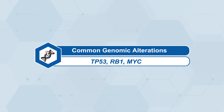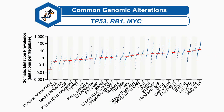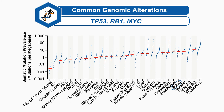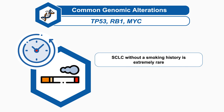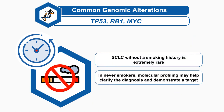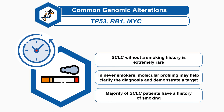Looking at the genomic alterations in small cell lung cancer, there are many somatic mutations present within tumor specimens. Across all tumor types, small cell lung cancer tends to have a greater amount of somatic mutation prevalence, likely due in part to the significant smoking history without any particular driver mutation. Small cell lung cancer is extremely rare in individuals without a smoking history. In someone who never smoked, molecular profiling may help clarify the diagnosis and demonstrate a target, but these likely represent outliers. The vast majority of patients do have a significant smoking history.